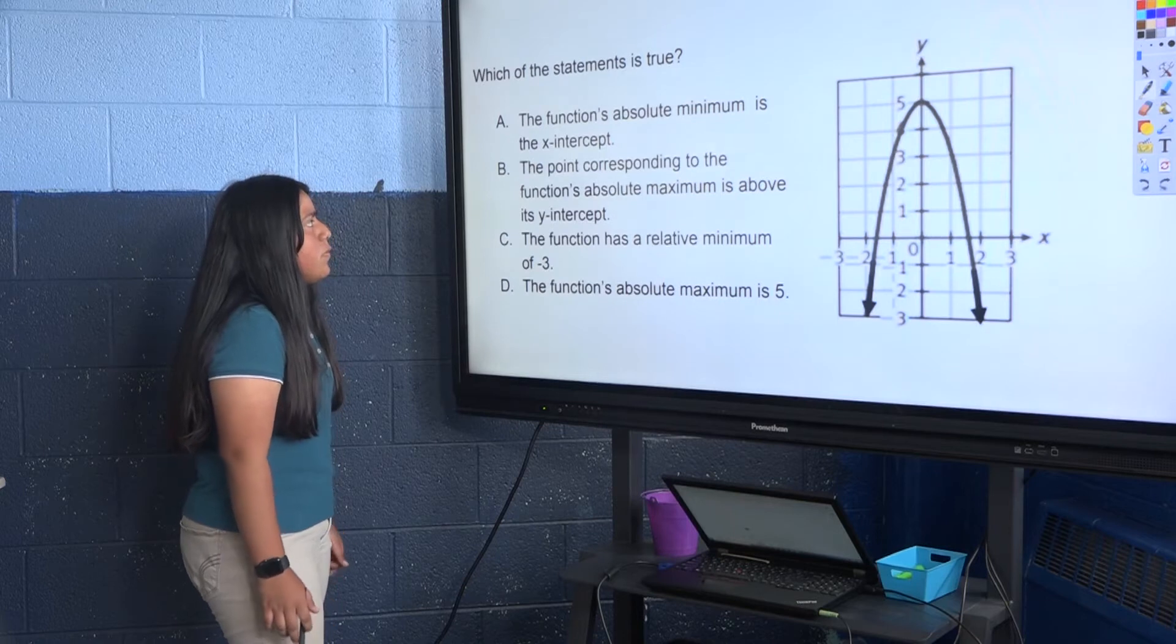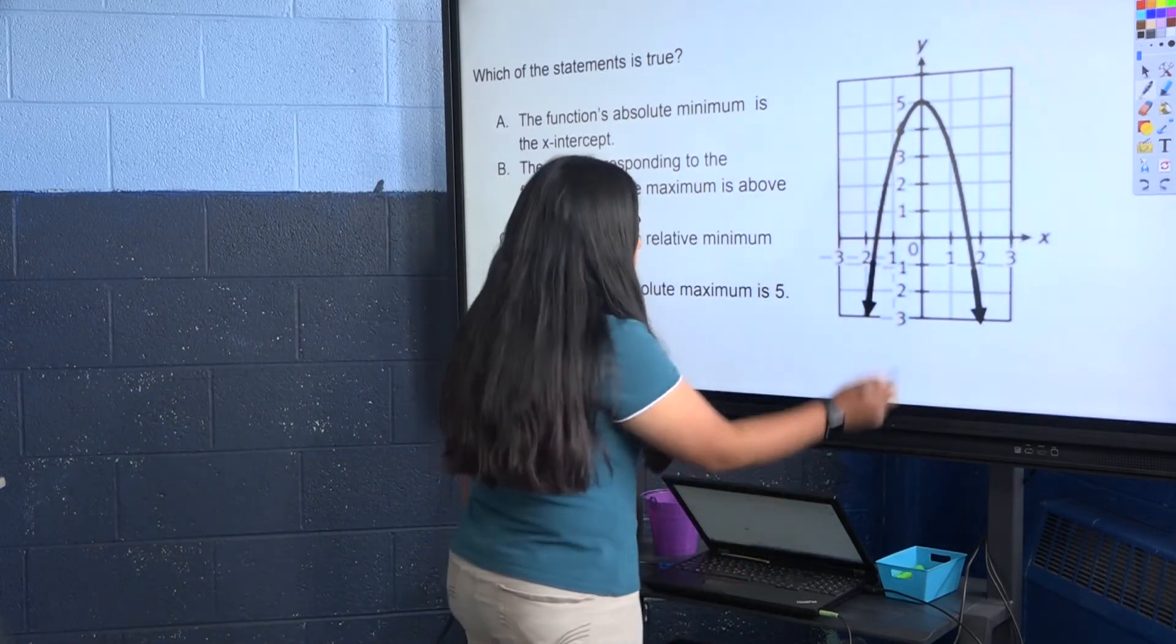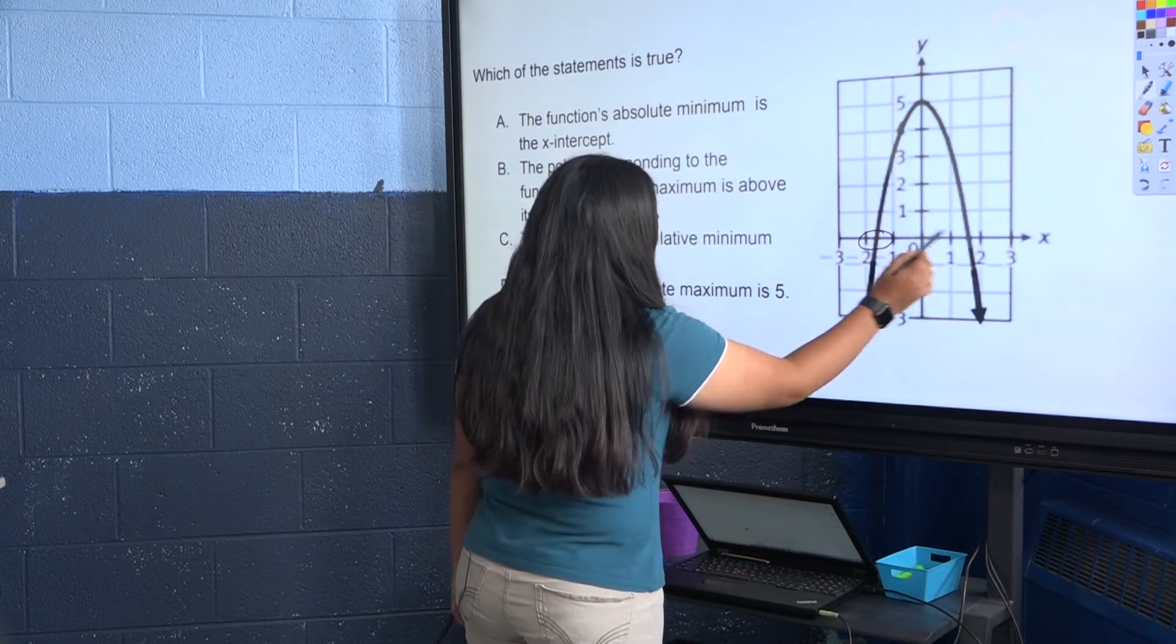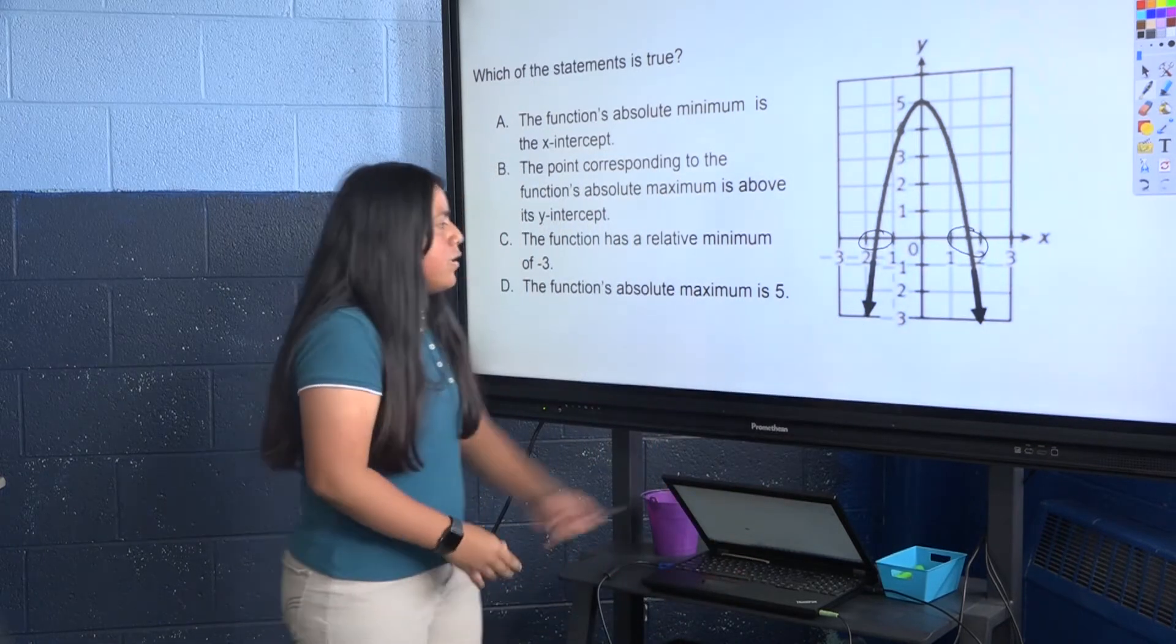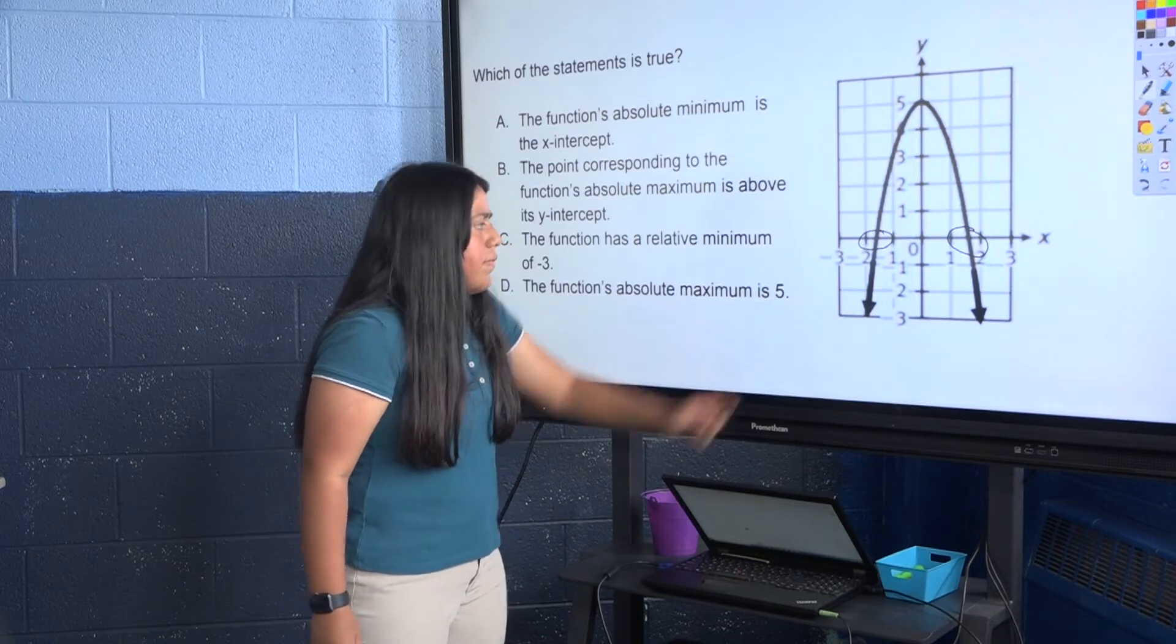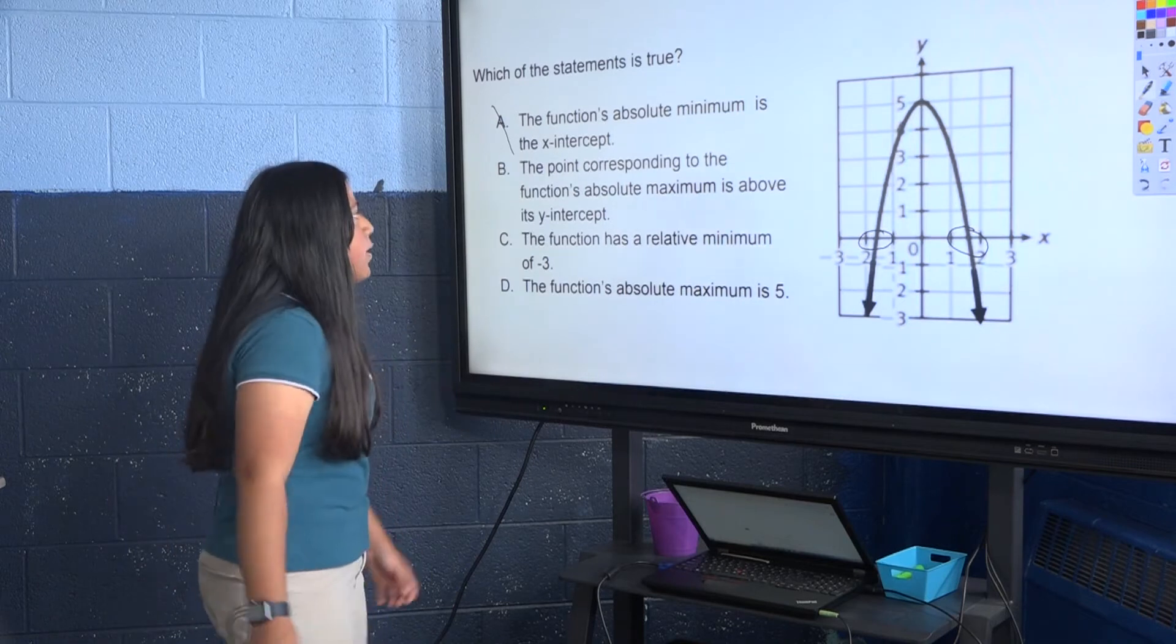The function's absolute minimum is the x-intercept. Our x-intercepts will be found here and here, when y is 0. As you can see, the graph still continues under, so it will not be the absolute minimum. So we can rule out A.